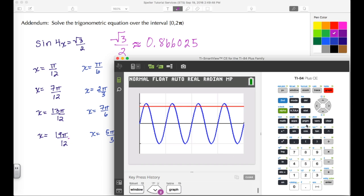When we go to graph, we see that these intersections are the eight solutions that we came up with. What I want you to notice is that √3/2 has the approximate value of 0.866025.